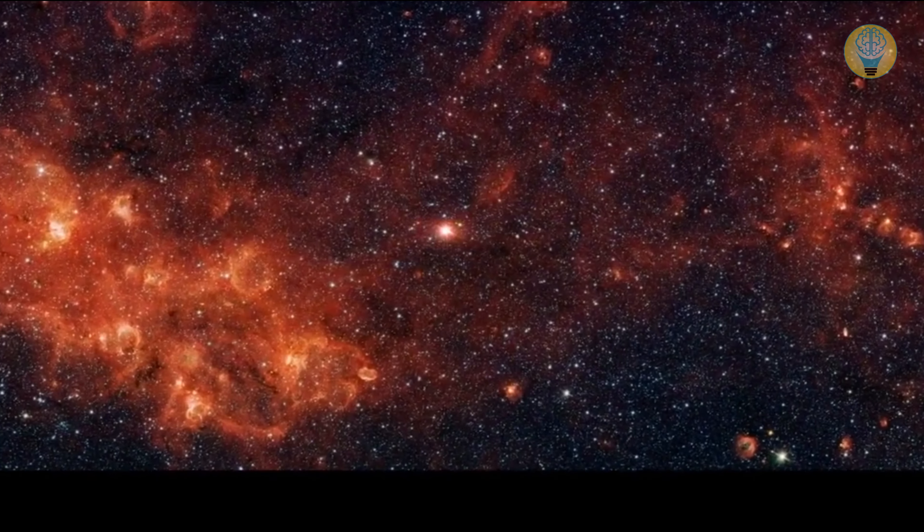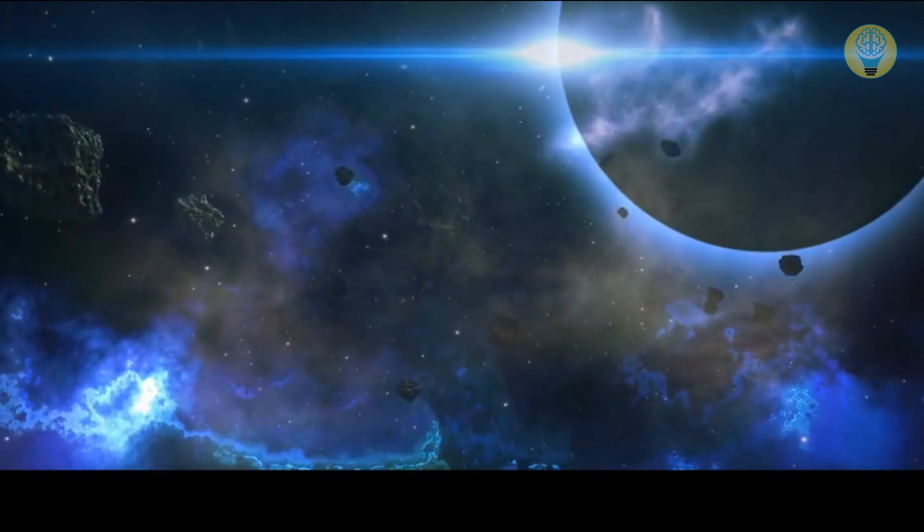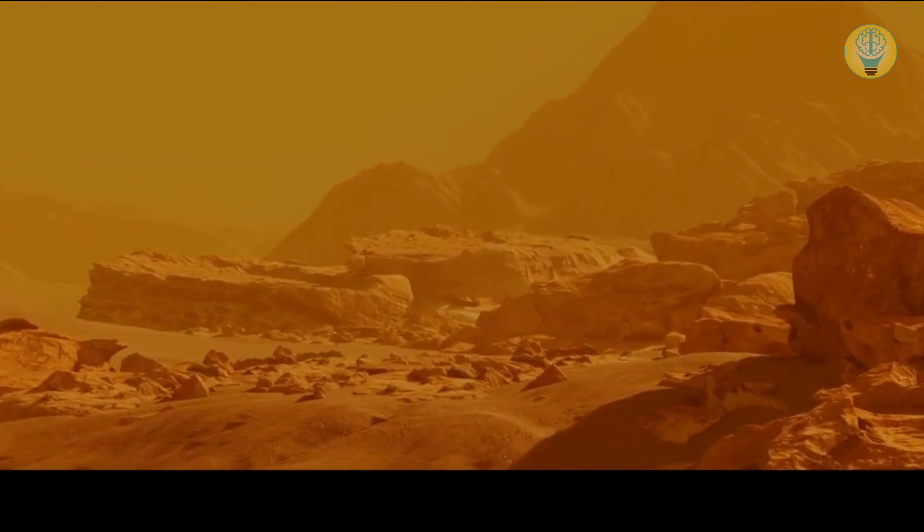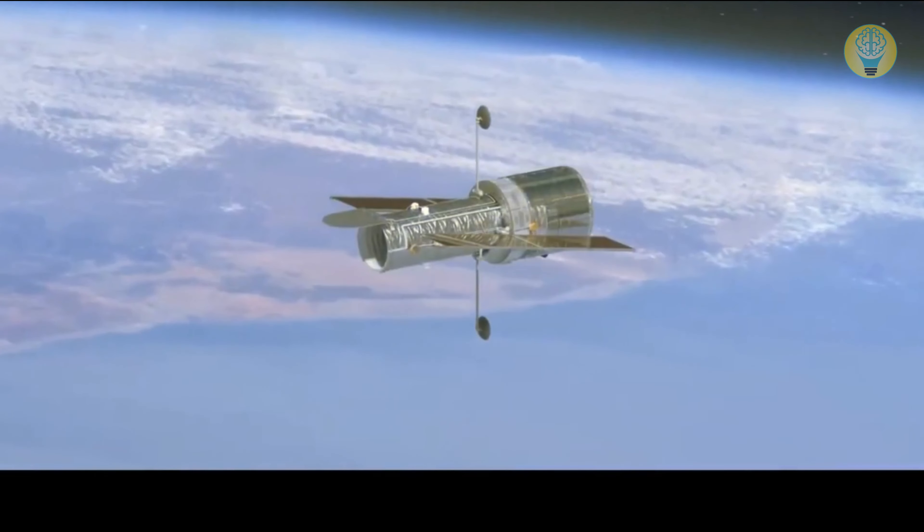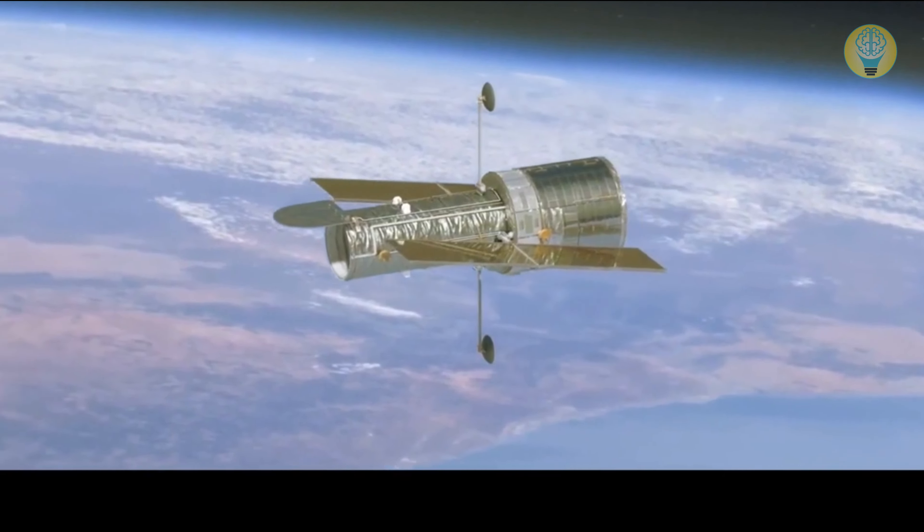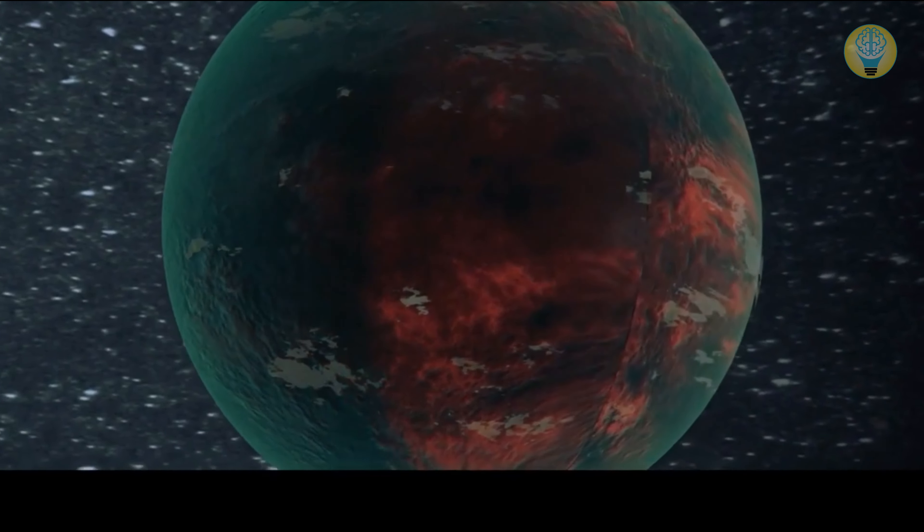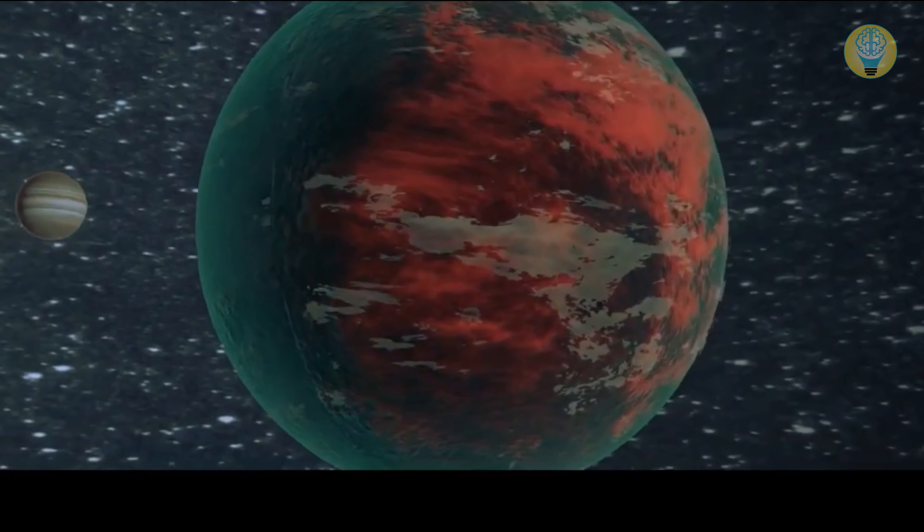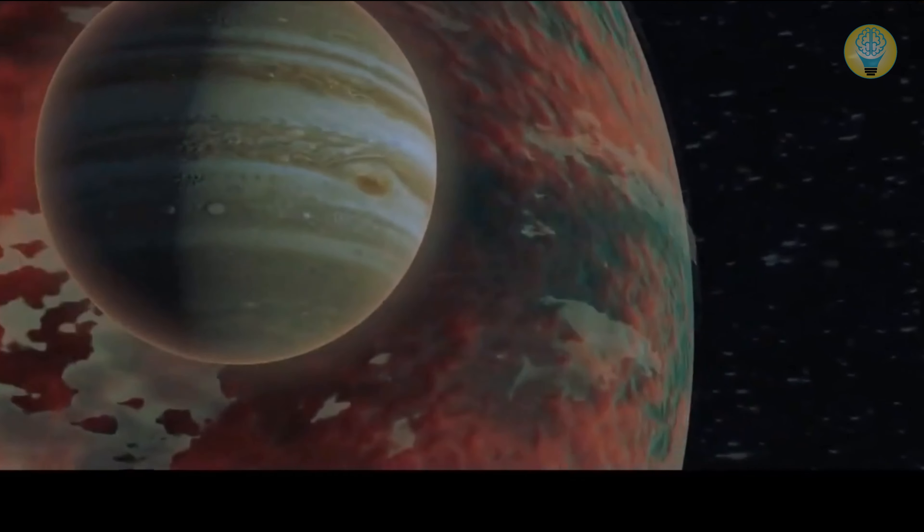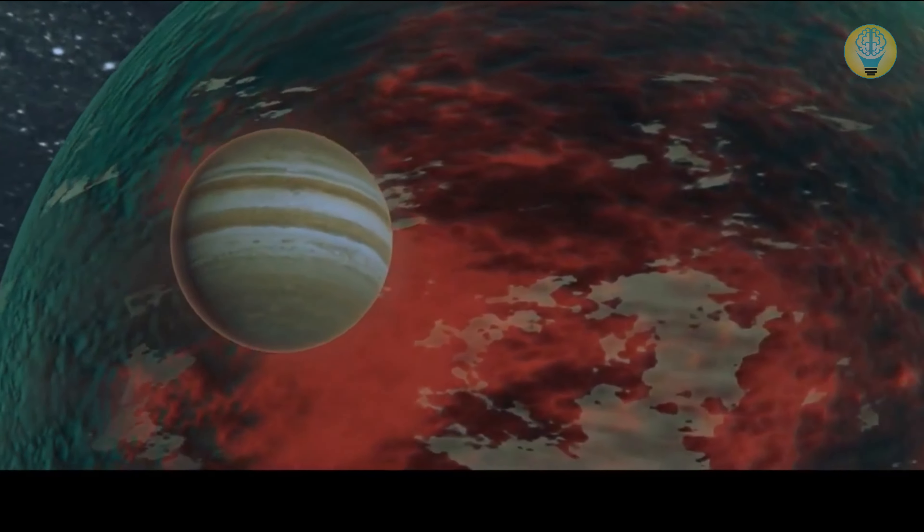Number 8. A Planet With Silicate Clouds. Introducing VHS-1256B, not a home video recording system, but a strange and exotic world shrouded in mystery and wonder. A place where the clouds are made of sand, and the sky is forever red. This isn't the stuff of science fiction, but a real-life discovery made by the brilliant minds at NASA. This is a brown dwarf exoplanet that's making waves in the astronomical community.